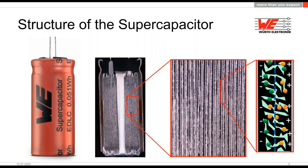When you look at how a supercapacitor looks in reality inside, it's quite similar to a normal traditional electrolytic capacitor — it's also a wound type with contact pins stitched to the foil and so on. But of course the inner structure is different and quite unique.